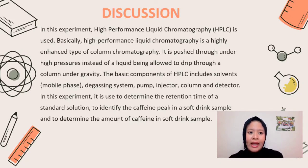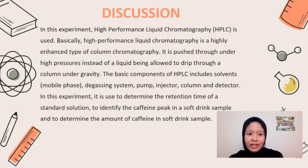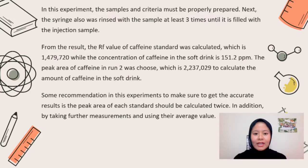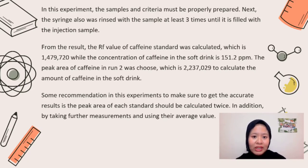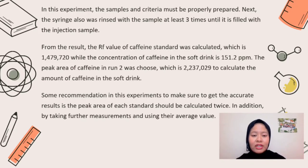In this experiment, in order to eliminate error in concentration, the sample and standard must be properly prepared. The syringe was also rinsed with the sample at least three times until filled with the injection sample. This decreases the chance that the concentration and composition of the standard will be affected by contamination. From the results, the RF value of caffeine standard was calculated as 1,479,720, while the concentration of caffeine in the soft drink is 151.25 ppm. The peak area of caffeine in run 2 was used, which is 2,237,029, to calculate the amount of caffeine in the soft drink, because the retention time value in run 2 is nearest to the retention time of the standard caffeine.